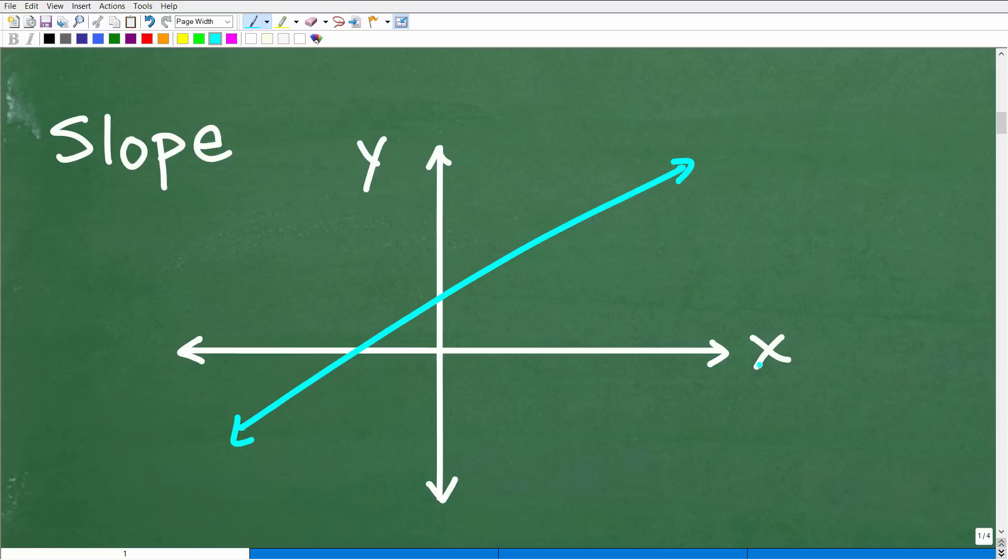Well, here we have some sort of line. This is the XY axis, right? So I have a line. I'm just sketching a line. If I'm trying to describe the steepness or the angle of this line, how can I do that?